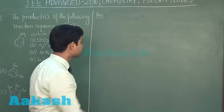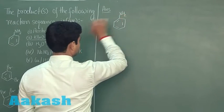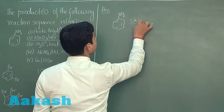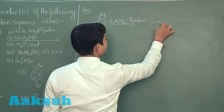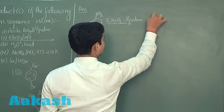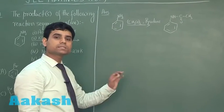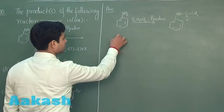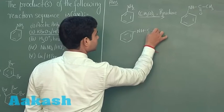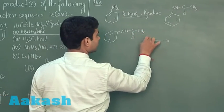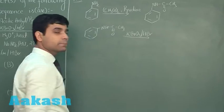Let us make the products one by one. First of all, we have aniline. When aniline reacts with acetic anhydride in presence of pyridine, the acylation of NH2 group takes place and this acylation decreases the reactivity of NH2 group. When it reacts with KBrO3 and HBr, bromination at para position takes place.